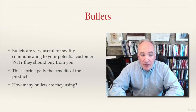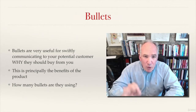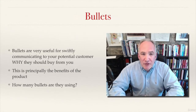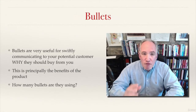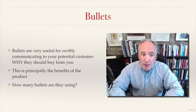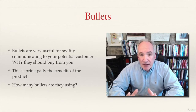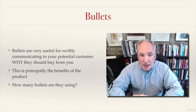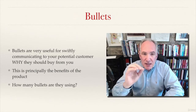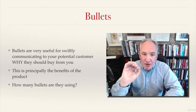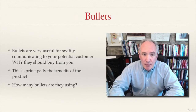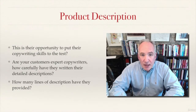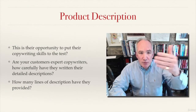The next thing to look at is the number of bullets. Bullets are a great way to convey the benefits of your product and reasons why the customer should be buying from you. So often you see listings with only one or two bullets — I think you can have six or seven. The key question is to see how many bullets the competitor listing includes.